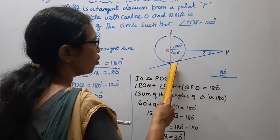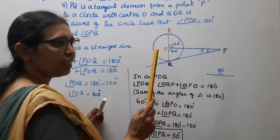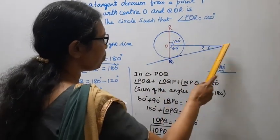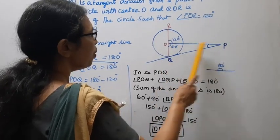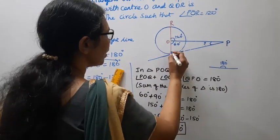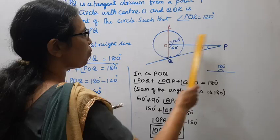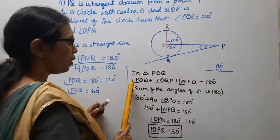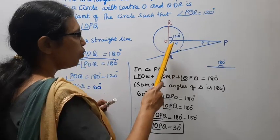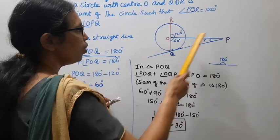In triangle POQ, the sum of angles is 180 degrees. Angle POQ is 60 degrees, angle OQP is 90 degrees — since PQ is a tangent, OQ is perpendicular to PQ. So OPQ equals 180 minus 60 minus 90.